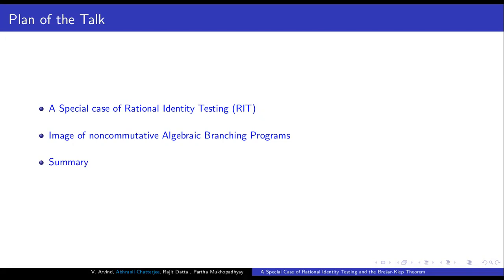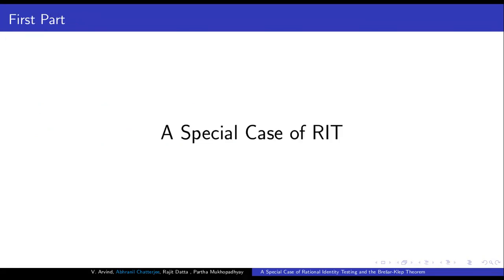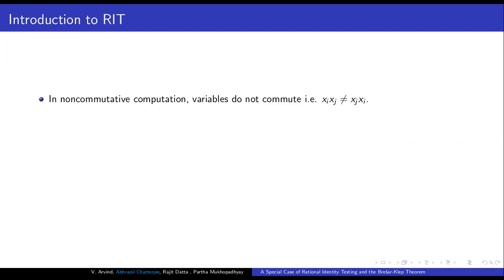Let us start with a special case of RIT. In algebraic complexity theory, we are mainly interested in studying the complexity of computing a polynomial, using operations such as addition and multiplication. When we talk about non-commutative computation, we impose the restriction that the variables do not commute — the left child and right child of a multiplication gate are distinguished. So the product x_i times x_j and x_j times x_i are considered different non-commutative words.